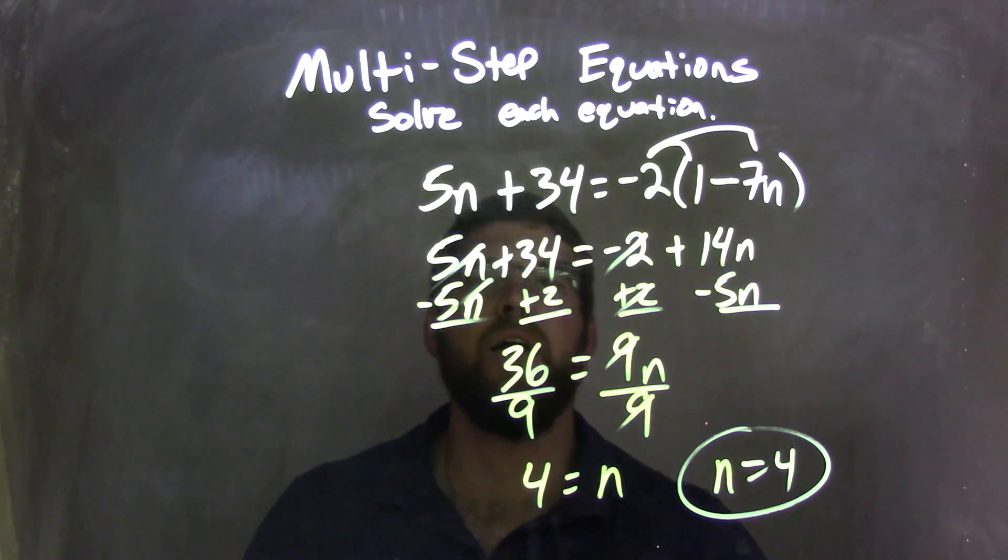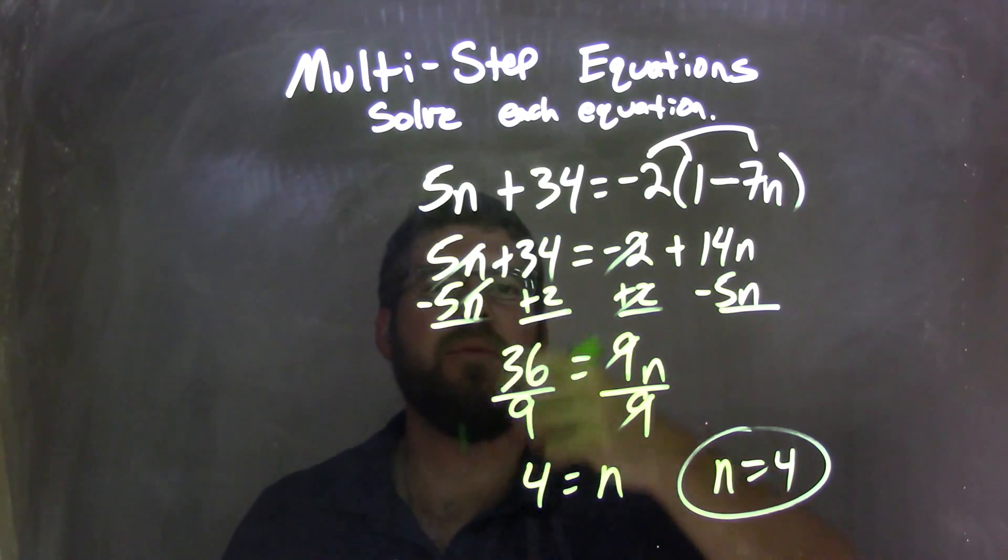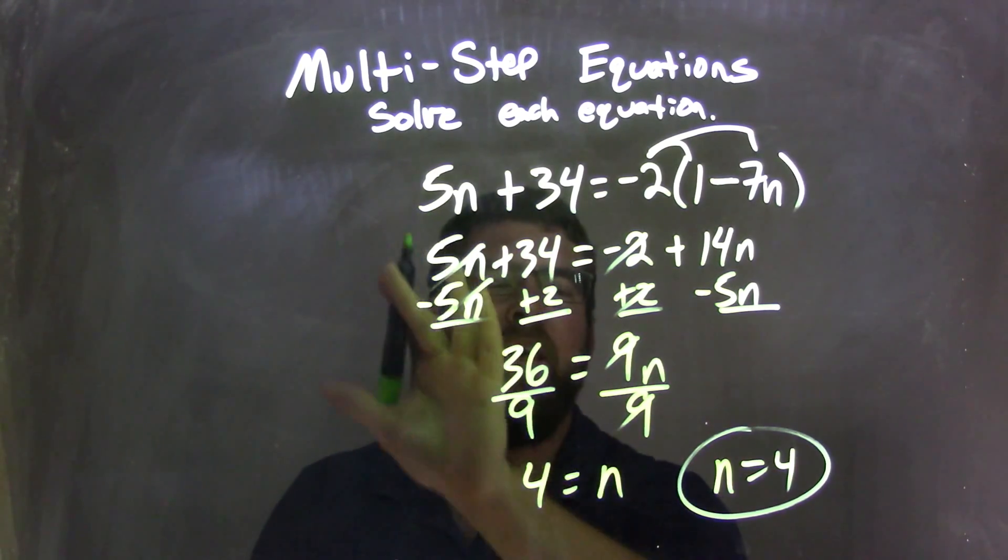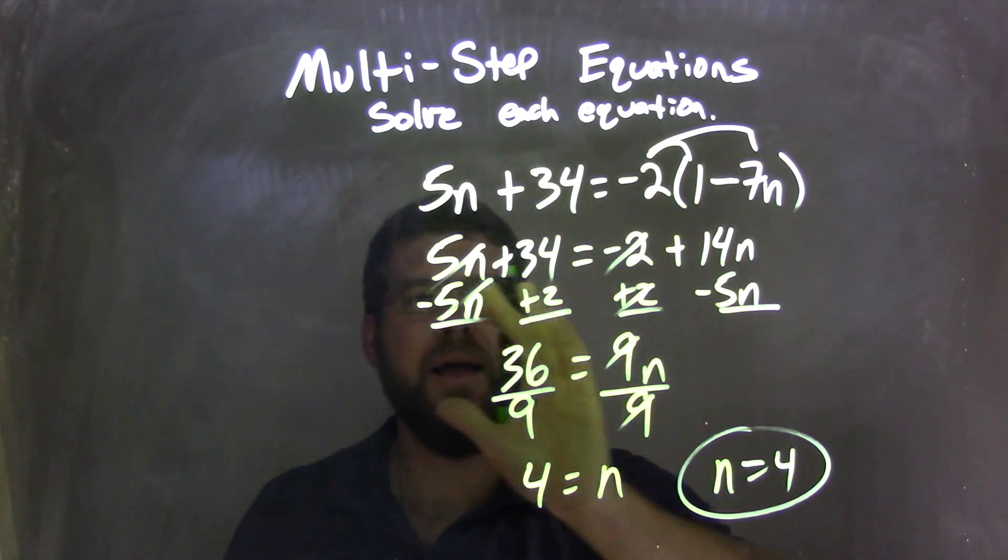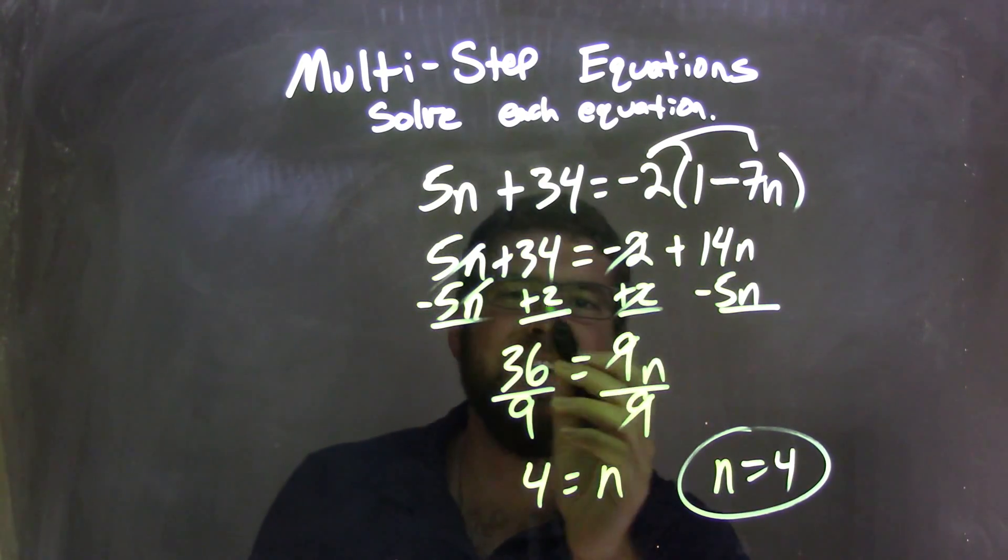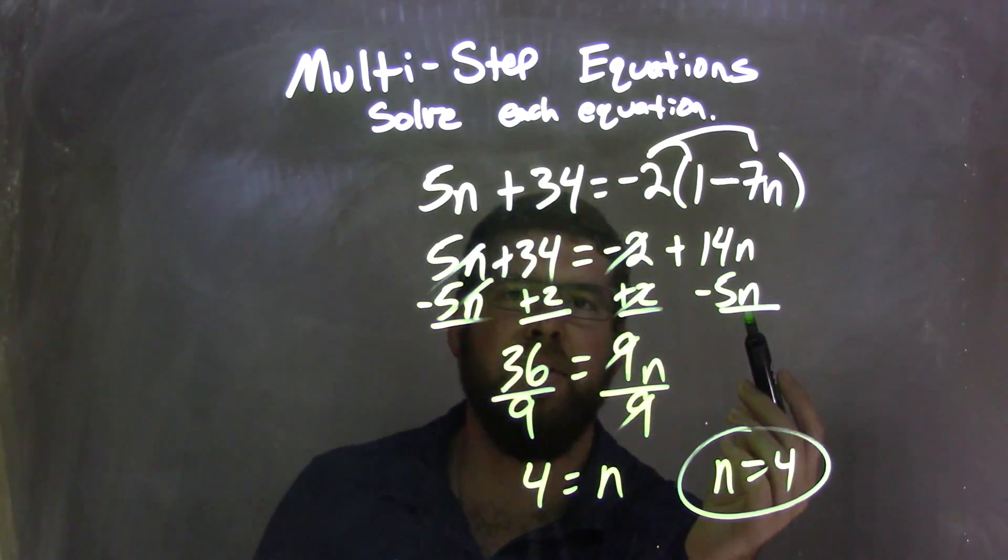Negative times a negative is a positive. Brought down on the left here, 5n plus 34. Now, I brought all my variables to the right, all my numbers to the left. I added a 2 to both sides, subtracted a 5n to both sides.